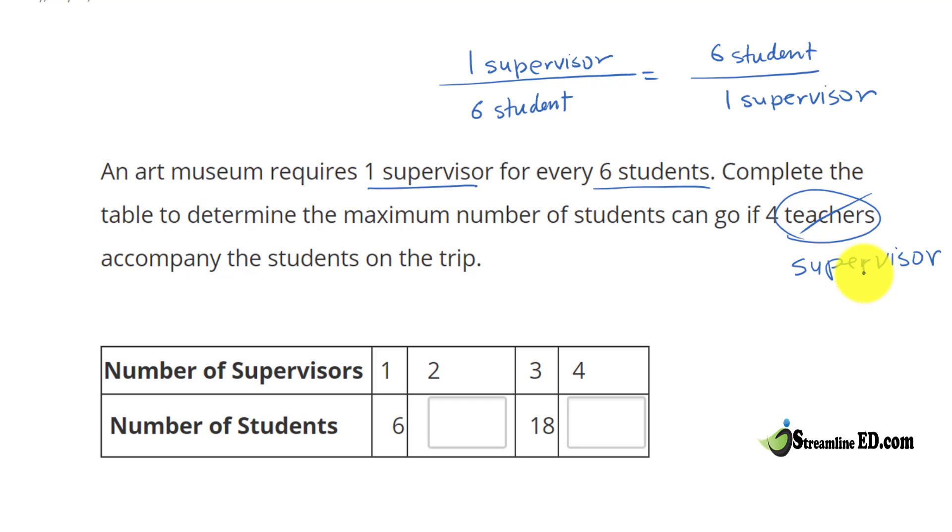Let's look at the table. We have one supervisor has six students. Two supervisors - remember how one supervisor can have six students, so we have plus one more. If that's the case, down here will be plus another six. So what is six plus six? It's twelve.